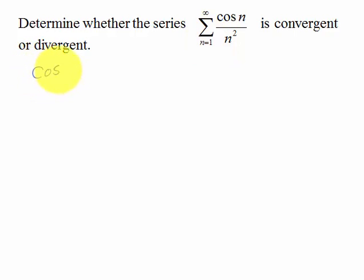So the first term would be cosine of 1 over 1 squared, and that is positive. The second term would be cosine 2 over 2 squared, and that's actually negative. The third term is cosine 3 over 3 squared, and that's also negative.